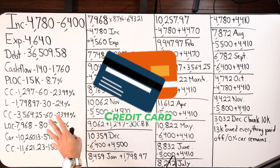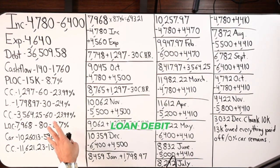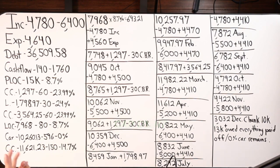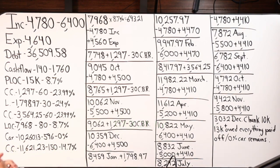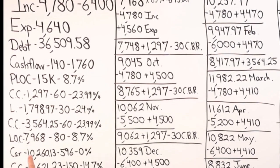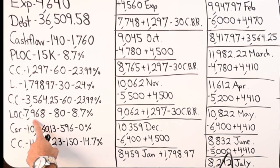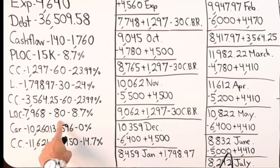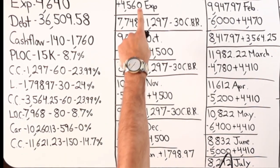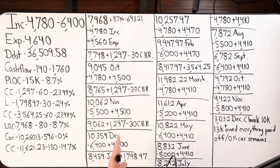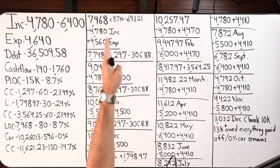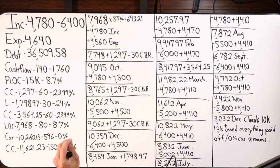Some key details regarding the debts: we've got credit card debts, loan debt, car debt, and pre-existing debt on the line of credit itself. The PLOC is a $15,000 credit limit with a balance owed of $7,968 — that's where we're starting. The payment is $80 at 8.7%.